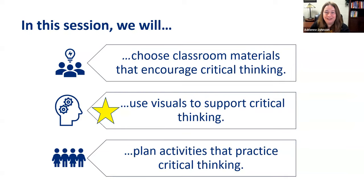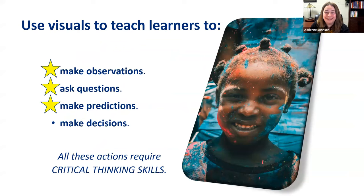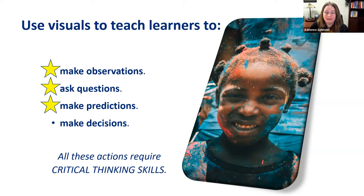Do you remember when I said that young learners like to make observations, ask questions, make predictions, and make decisions? Well, visuals can help with all of these. These are all critical thinking skills, and visuals often help students to understand those difficult skills. I'm going to show you some examples for how to use visuals to help young learners specifically make observations, ask questions, and make predictions. Let's get started.